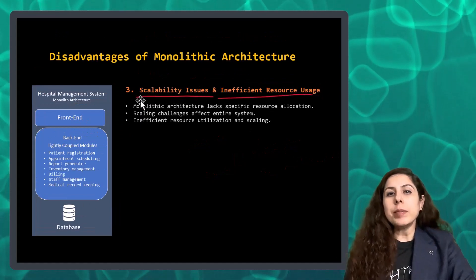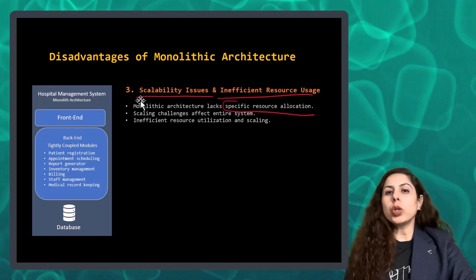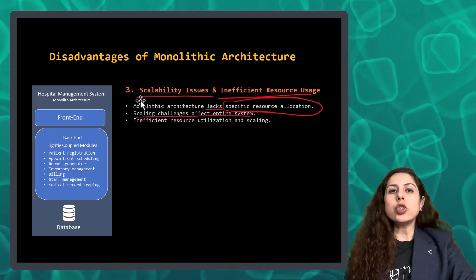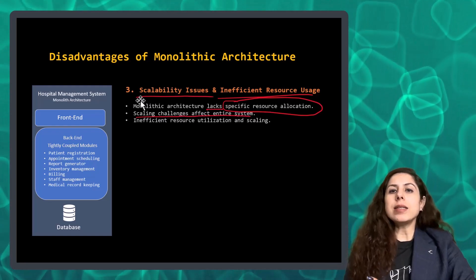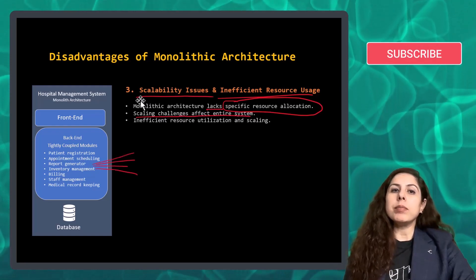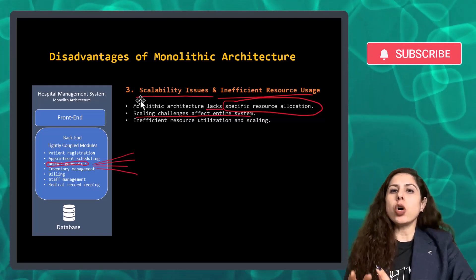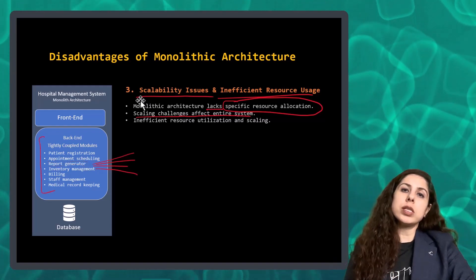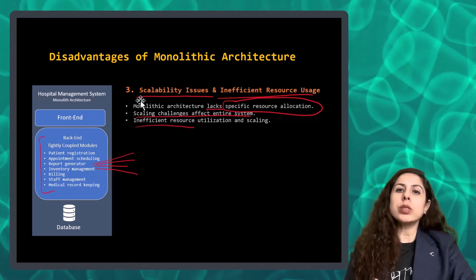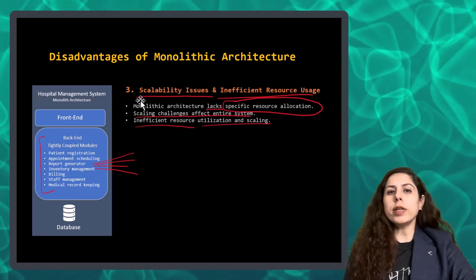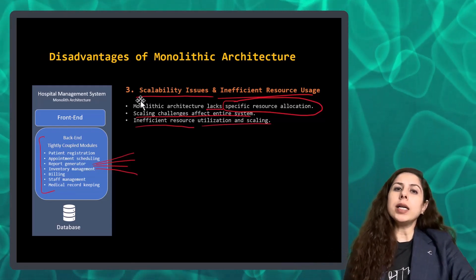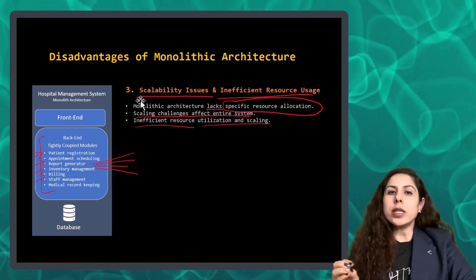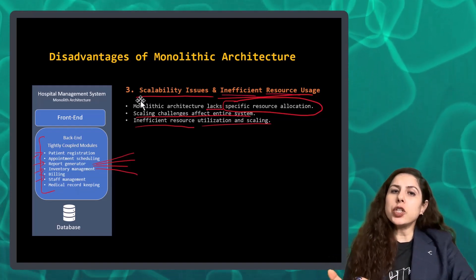Third, scalability issues and inefficient resource usage. Monolithic architectures lack the ability to allocate resources to a specific component, leading to overall inefficiency. For instance, in a hospital management app, if the report generation module needs more power during peak times, you can't allocate resources to just that part — you have to boost resources for the entire application. This results in over-resourcing some parts and under-resourcing others, and there is no guarantee that the needy component gets what it requires.